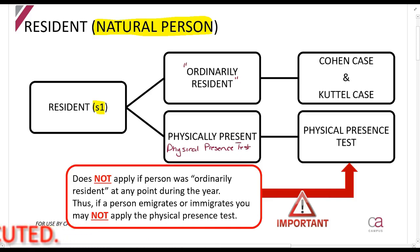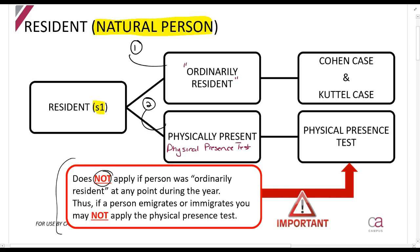Before going into the detail, what is very important to understand is that you will first apply the ordinary resident consideration, and only then consider the physical presence test — you must do it in that order. The physical presence test does not apply if the person was ordinarily resident at any point during the year. Even if you were a resident for a single day, you cannot apply the physical presence test.